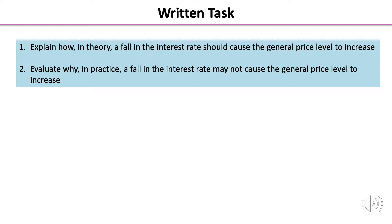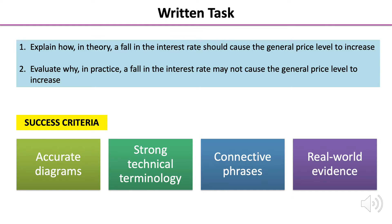We're now at a point where we can attempt a written task. There are two questions: the first is rooted in analysis — explain how in theory a fall in the rate of interest should cause the general price level to increase. The second is evaluative — evaluate why in practice a fall in the interest rate may not cause the general price level to increase. Our success criteria includes accurate diagrams supported by strong technical terminology, use of connective phrases which is paramount for developing well-developed chains of reasoning, and evidence of wider reading with real-world evidence built into your answers.